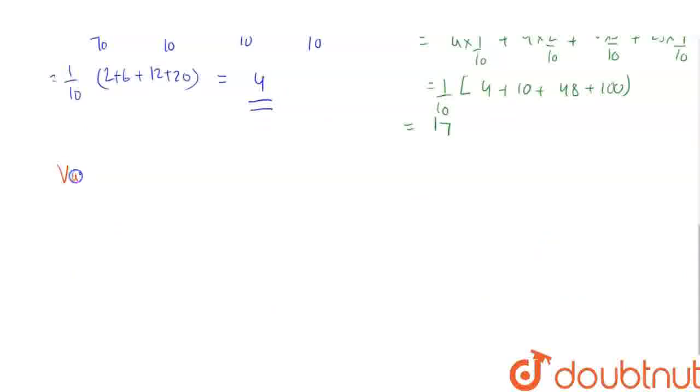So, variance of X comes out to be summation xi square fi minus summation xi fi whole square. That is 17 minus 4 square, that is 17 minus 16, which is equal to 1. So, mean of X is 4 and its variance is 1.